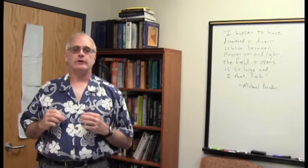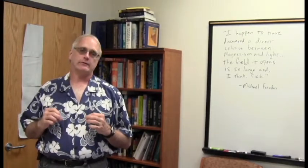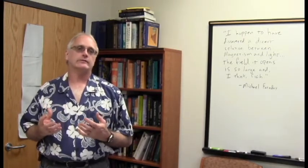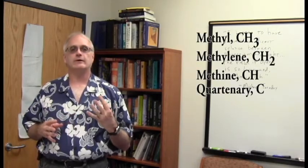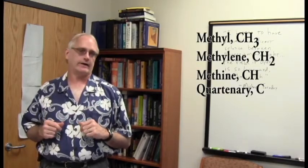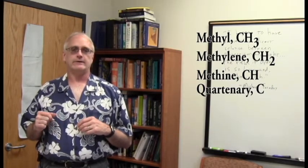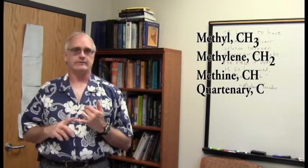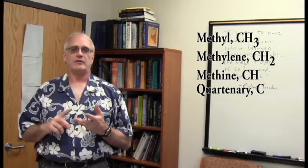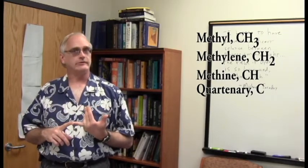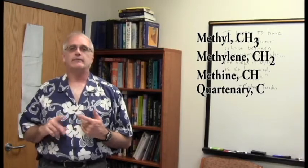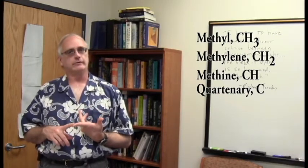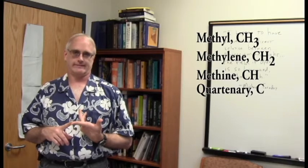In order to introduce them, I have to remind you that in an organic structure, we run across four types of carbon, four kinds of carbon, characterized by the number of hydrogens that are attached. We have the methyl groups, the CH3s, we have methylene groups, CH2s, we have methine groups, CHs, and we have the quaternary carbons, those that have no protons attached.